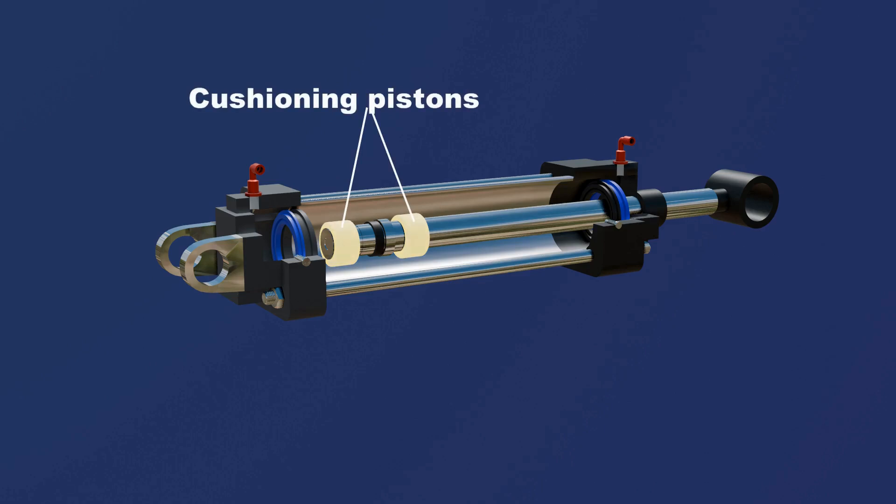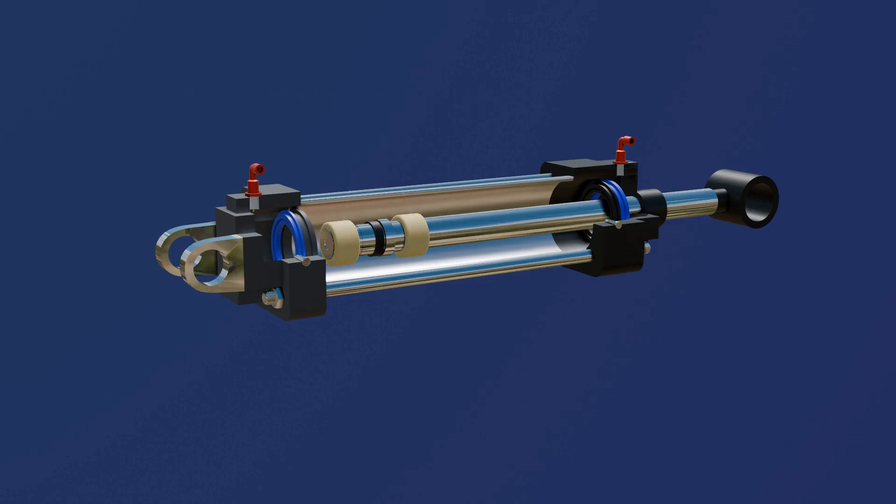There are two cushioning pistons, one at each end, which help reduce impact forces, minimize noise, and extend the life of both the cylinder and the machinery it operates.